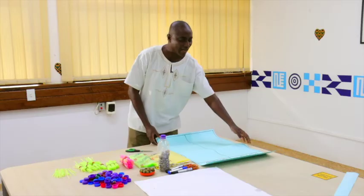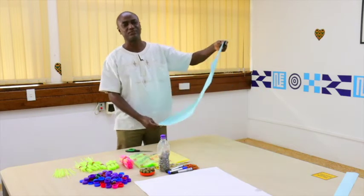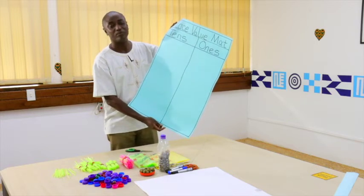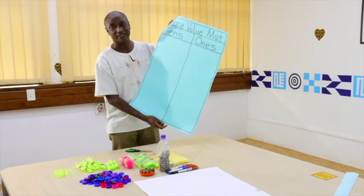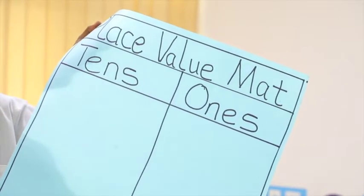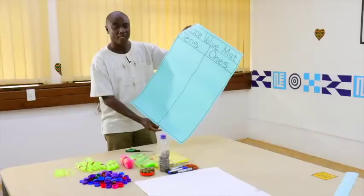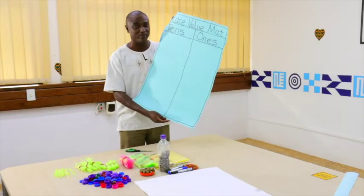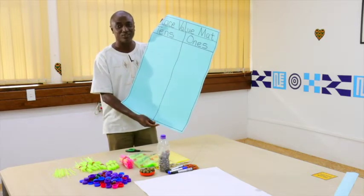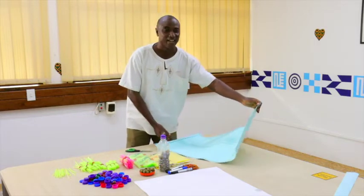I also have my Manila card, which I have used to draw my place value mat, on which we are going to do the modeling of the quantities. If you don't have money to buy a Manila card, you can use the back of old calendars, as well as cardboard or used papers that you find available.